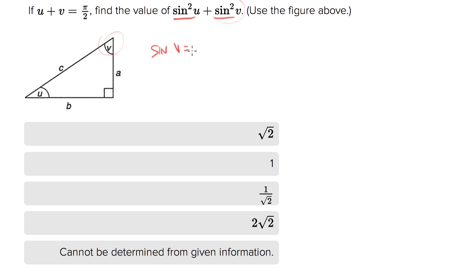Sine of v is equal to opposite over adjacent, which is b over c. What else is equal to b over c? Cosine of u is equal to b over c.